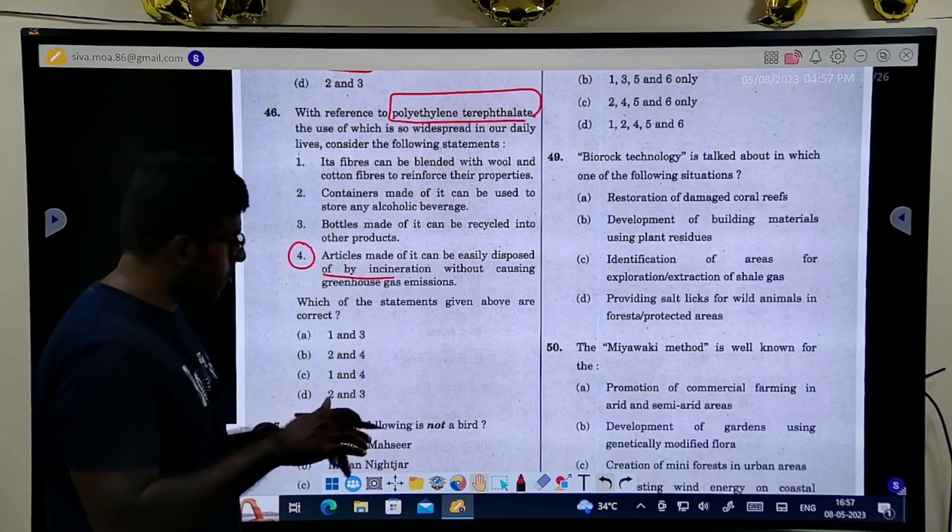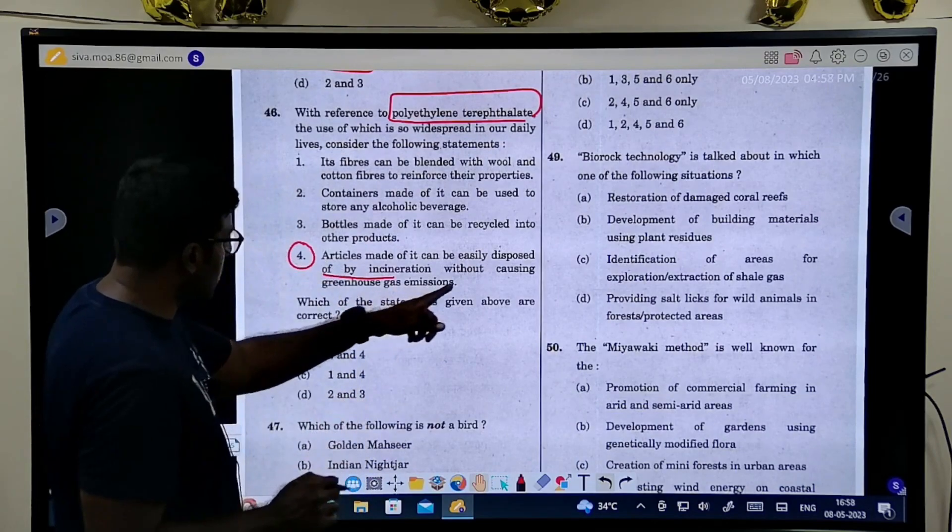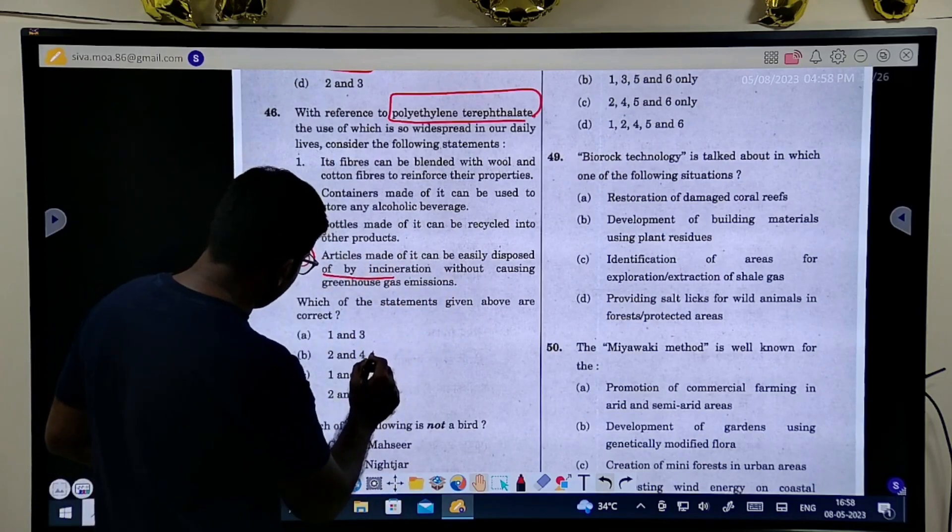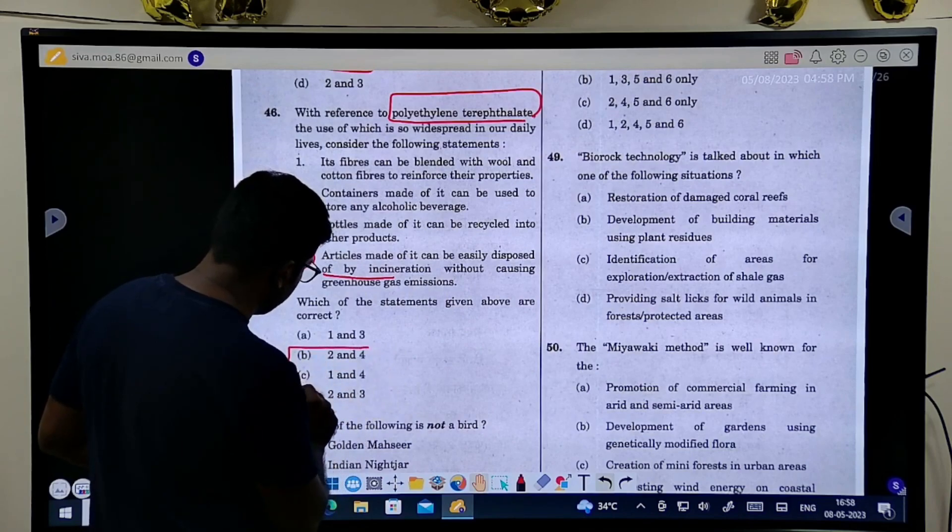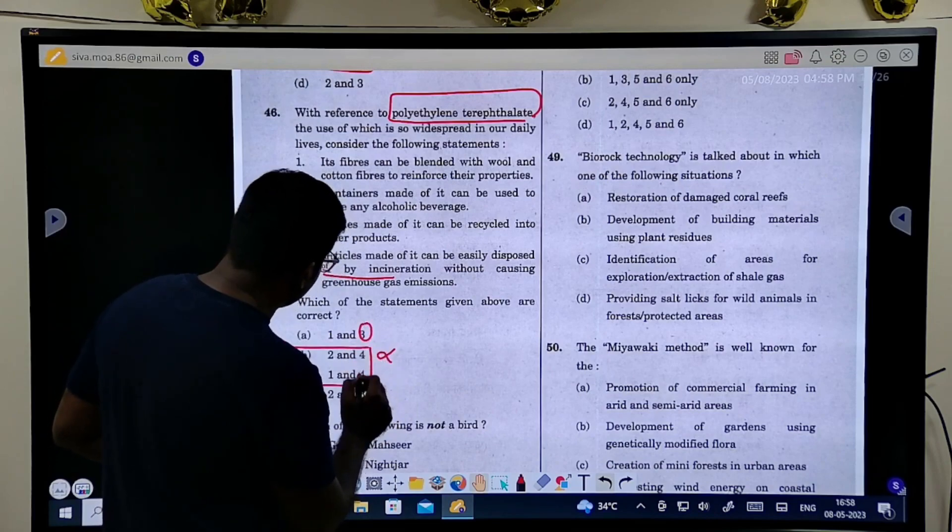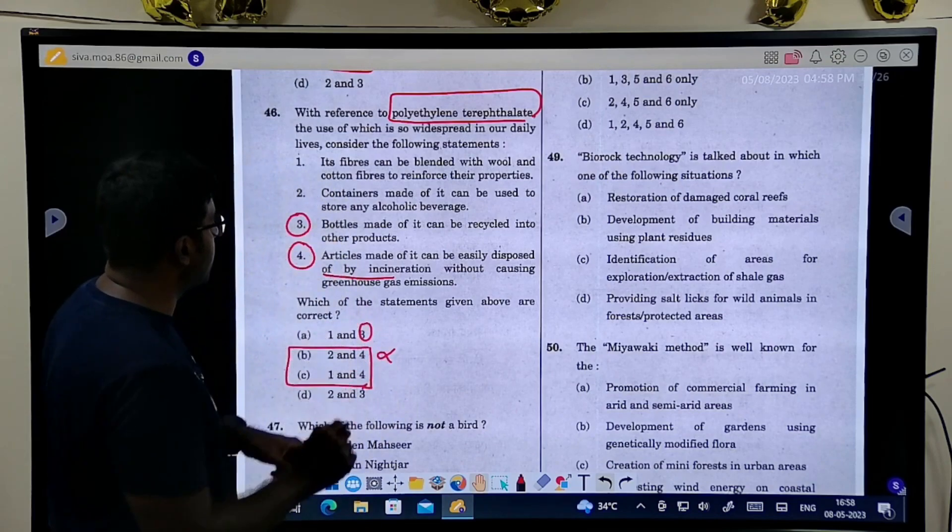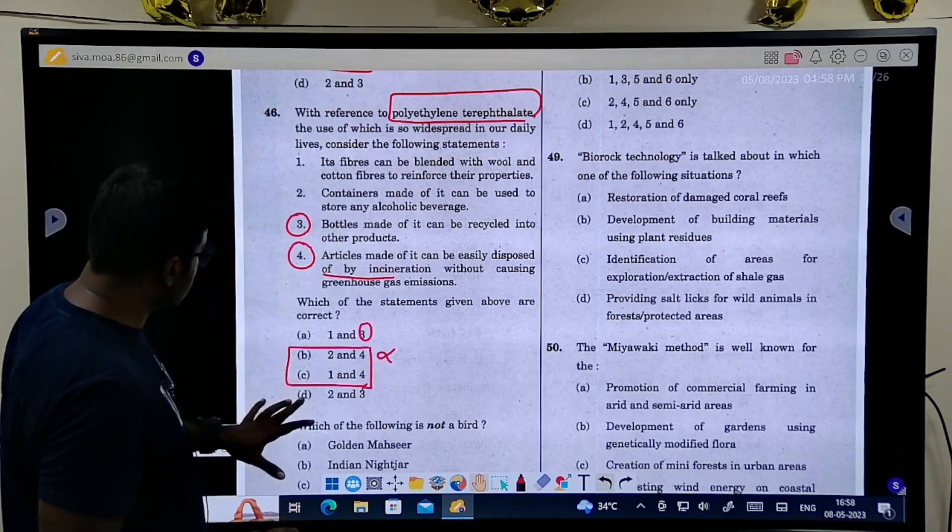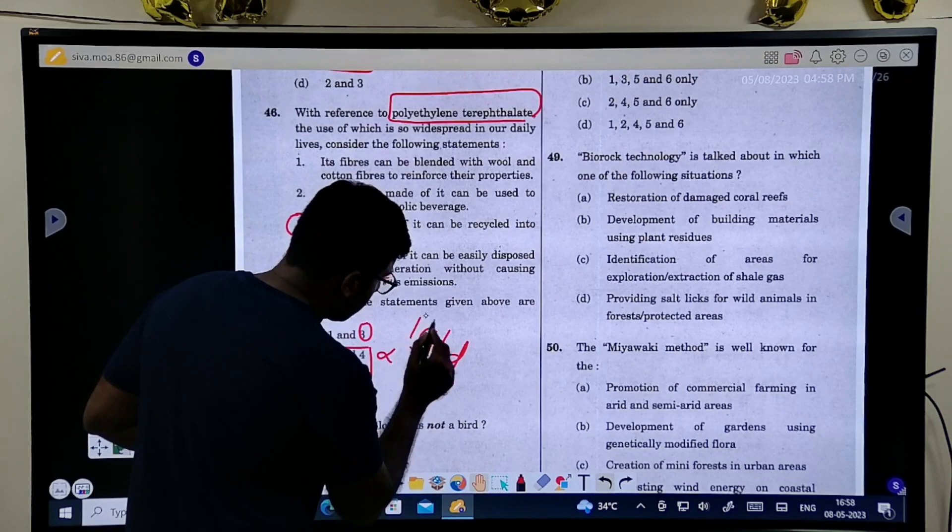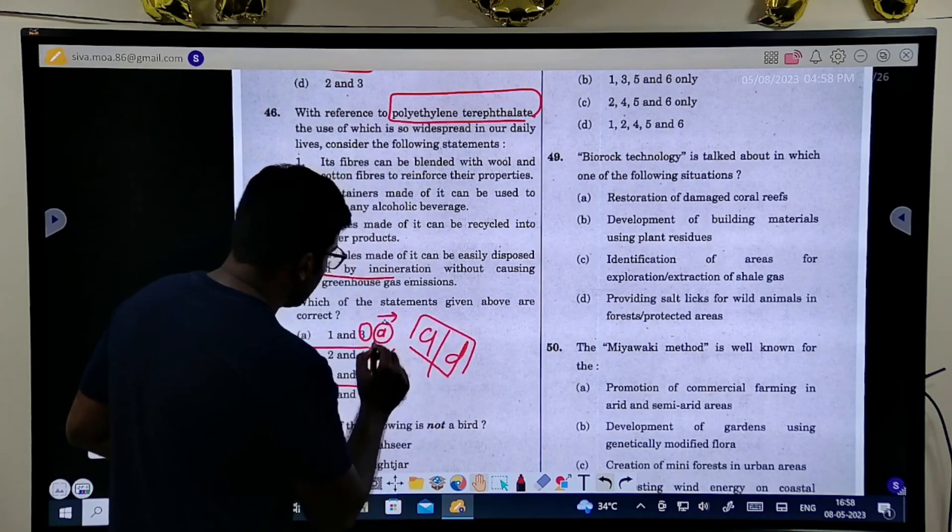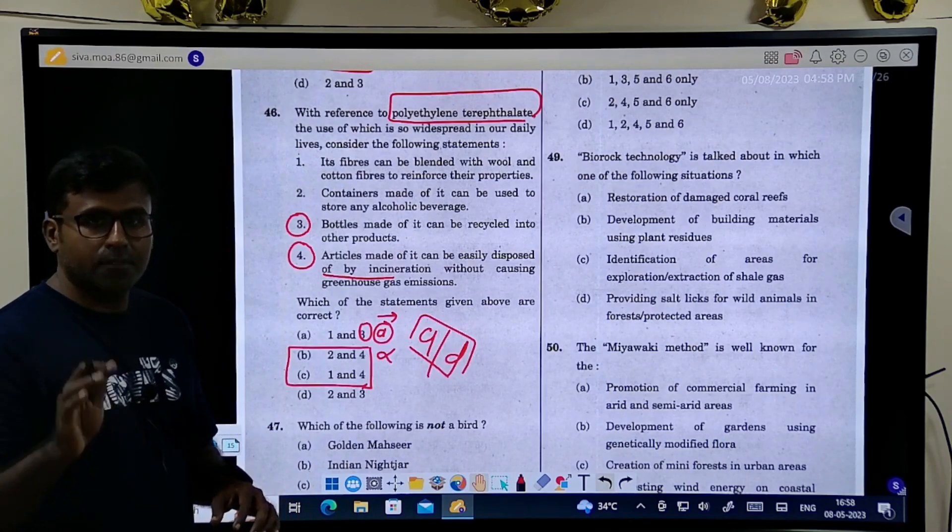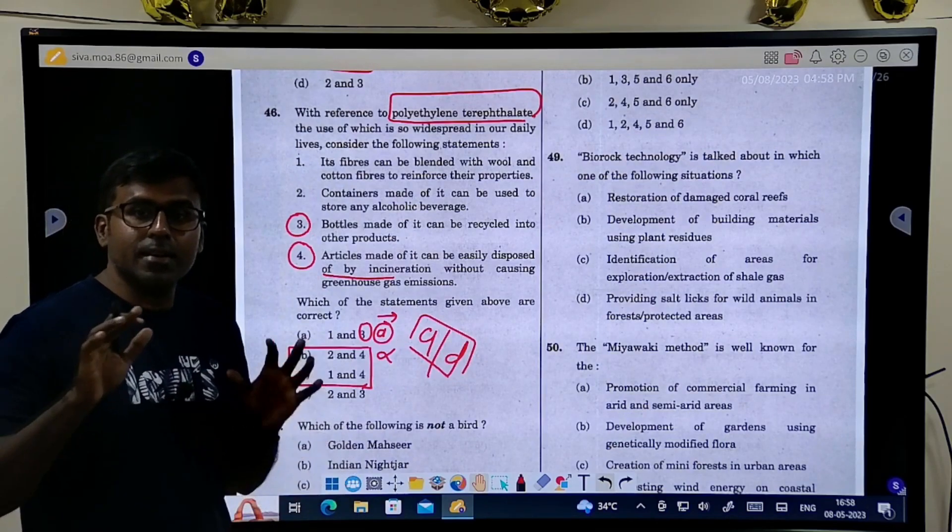But this question, polyethylene terephthalate - I think this is the bottle that we use. Here again, articles made can be easily disposed of, this is wrong. In this, I know this only. From this, I will start the answer. One question actually derails me, the next question will come. Here I understand, this is something which I know. It is not possible that incineration will not release. So this is wrong.